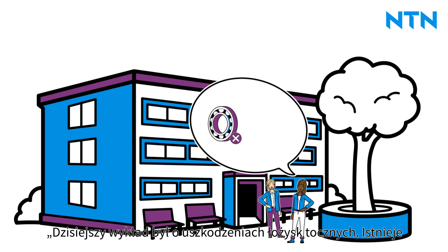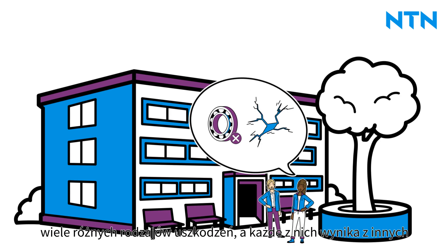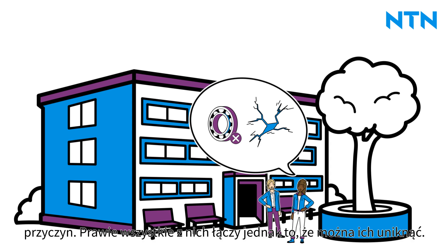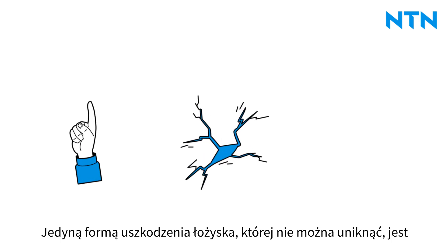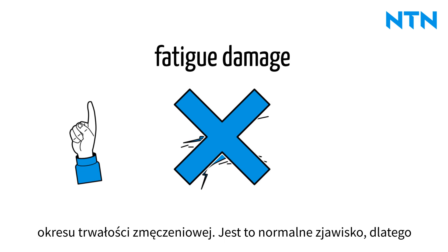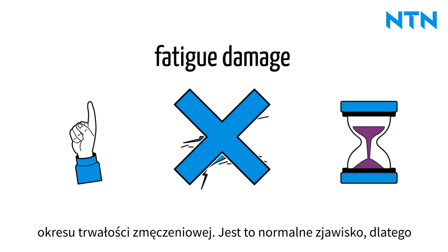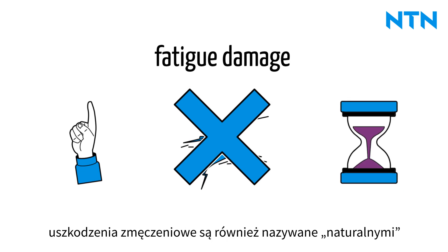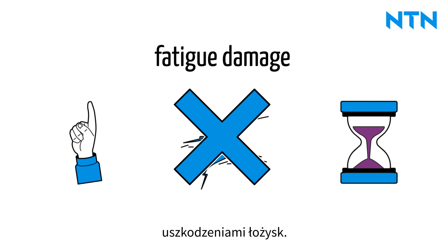There are many different types of damage, each of which occurs due to different causes, but almost all of them have in common that they can be avoided. The only form of bearing damage that cannot be avoided is fatigue damage. This occurs after a bearing has reached its fatigue life. This is normal, and therefore fatigue damage is also called natural bearing damage.